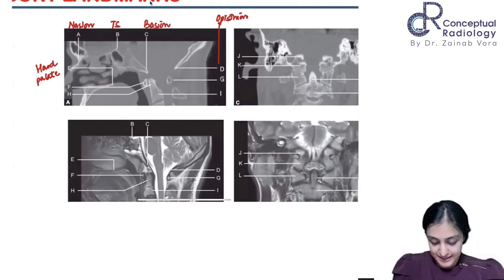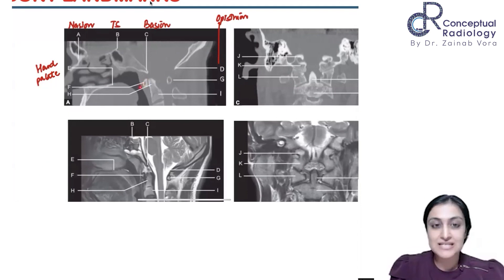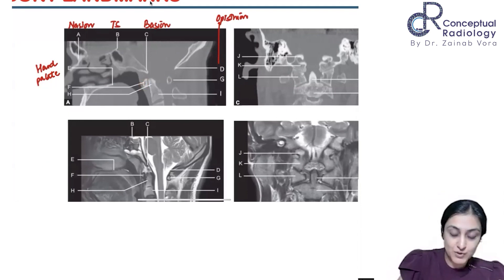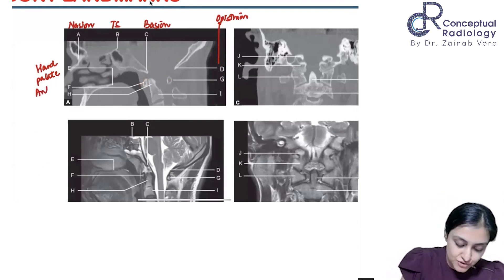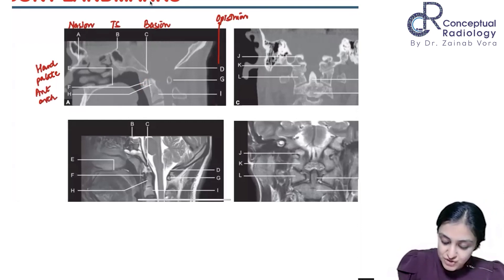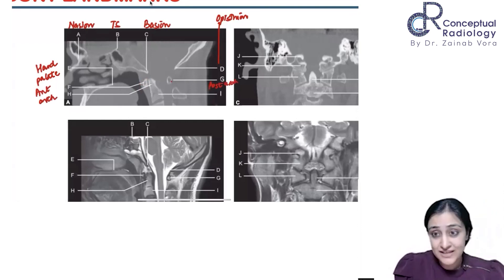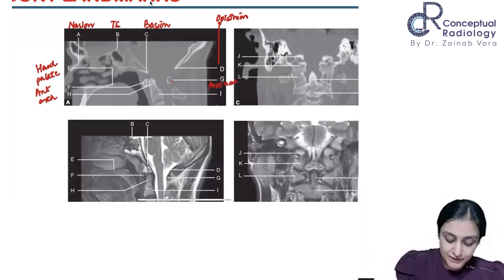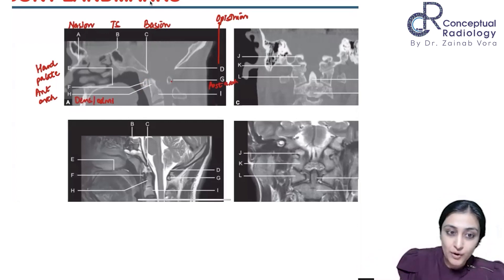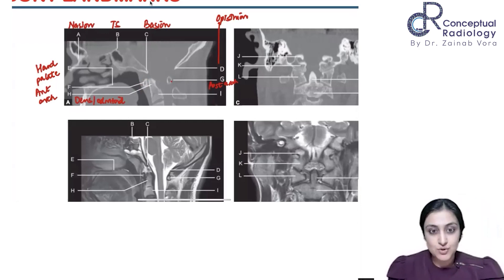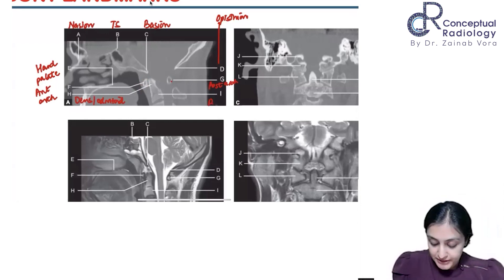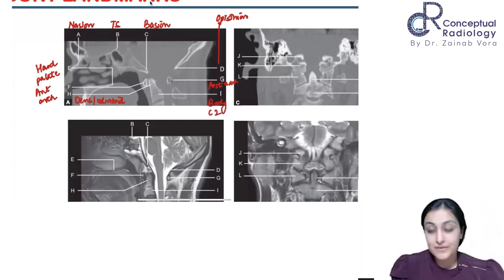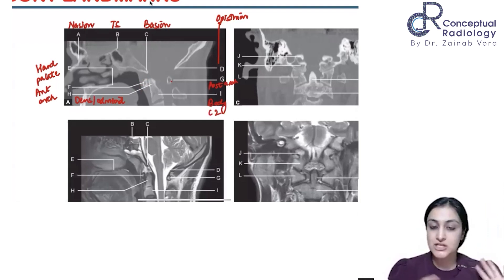What is point F? F is the atlas — the anterior arch of the atlas, right? F is the anterior arch of atlas, and what would be G? G is the posterior arch of atlas. What is H? That's C2. What part of C2? That is the dens, or odontoid of C2, and I is the body of C2.